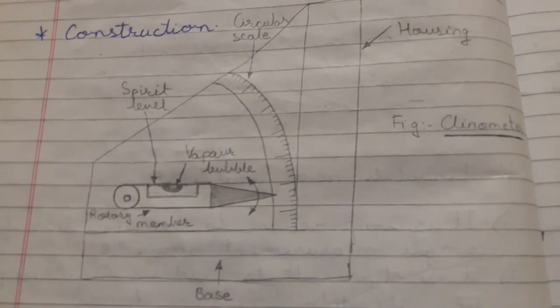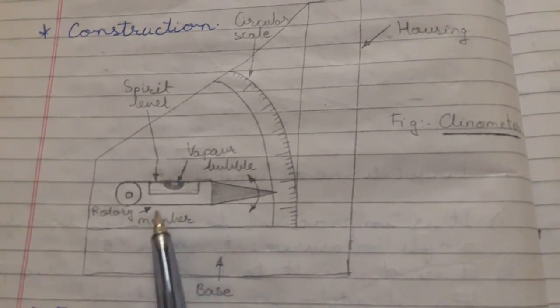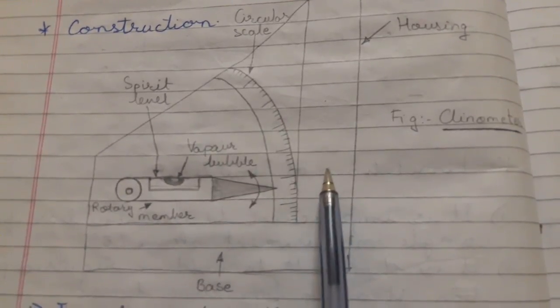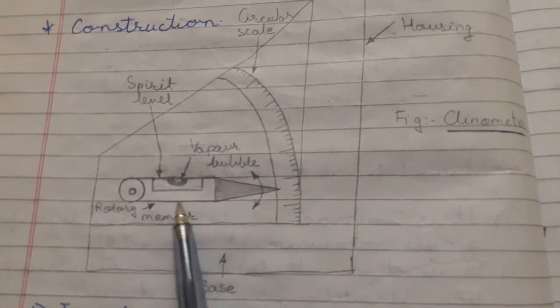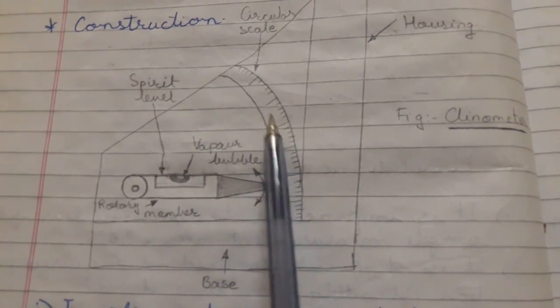The principle of Clinometer: Clinometer has a spirit level mounted on a rotary member carried in a housing. The inclination of the rotary member is measured using the spirit level and the circular scale.